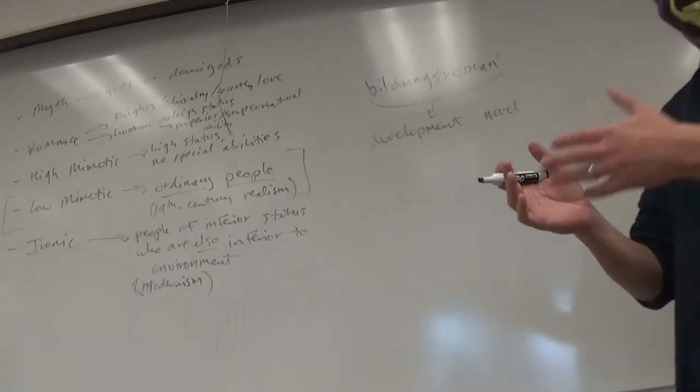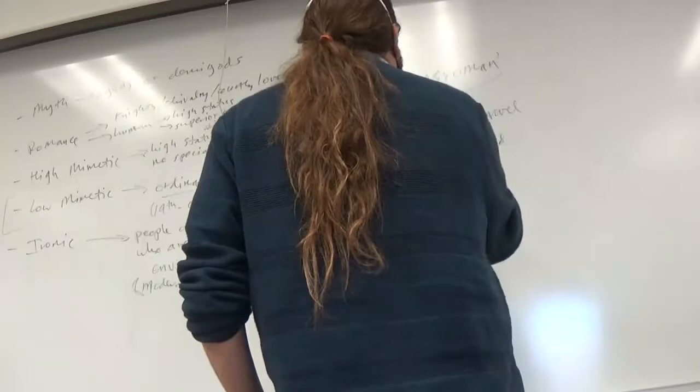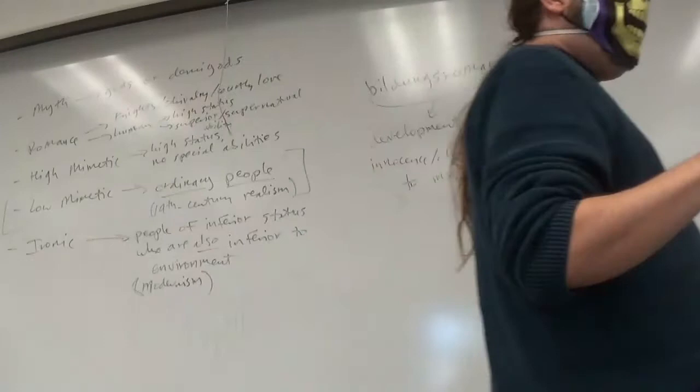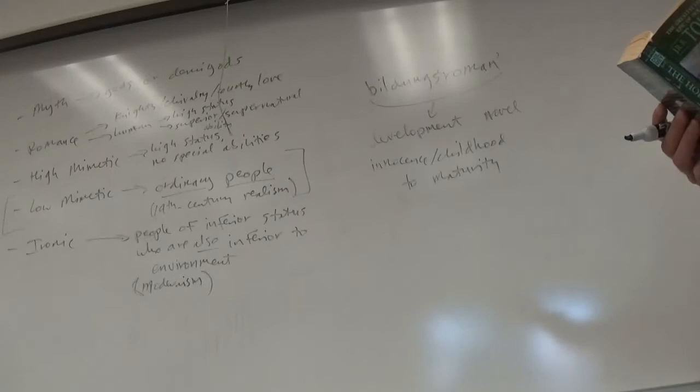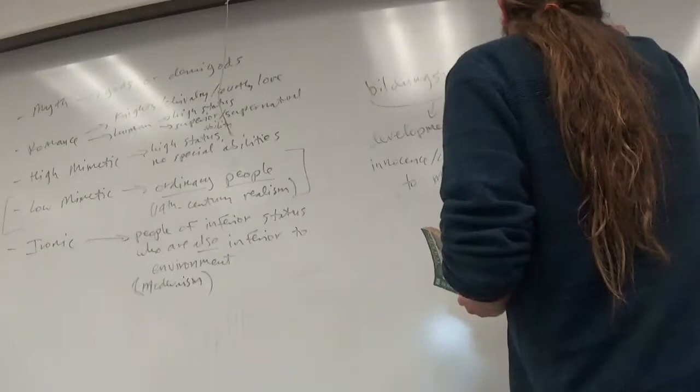Now, Bilbo Baggins in these schemes is usually described as a low mimetic hero operating in either a romance or a high mimetic world. So Bilbo's own comfortable little hobbit hole occupies this kind of Victorian realist end of the spectrum. But from that hobbit hole, he goes out and experiences a wider romance world that is full of monsters and heroes and all kinds of supernatural beings and ghosts. So in many ways, what we have here is kind of like the classic fish-out-of-water narrative.